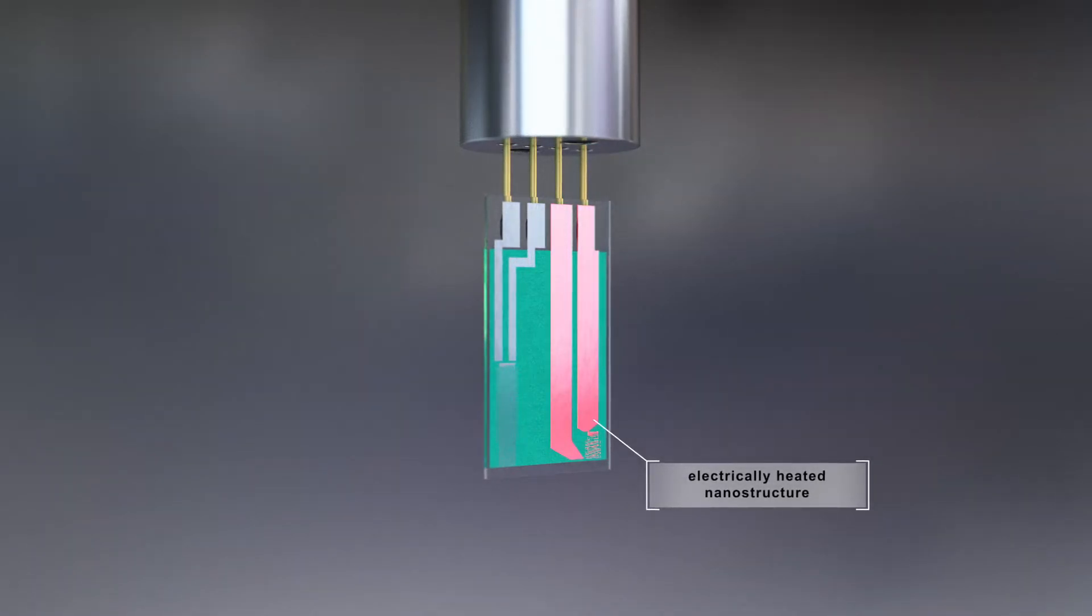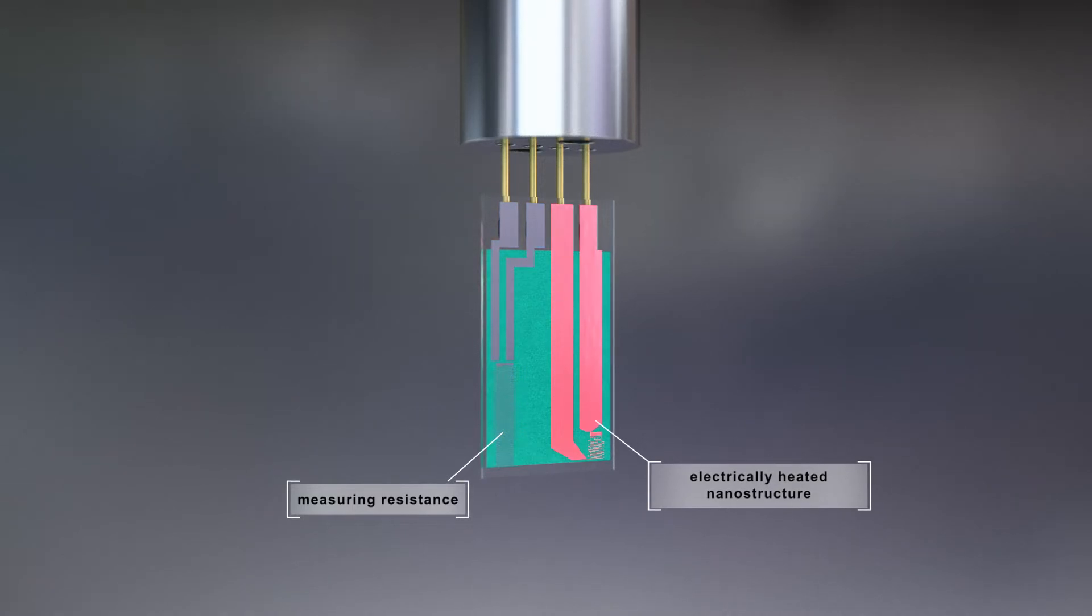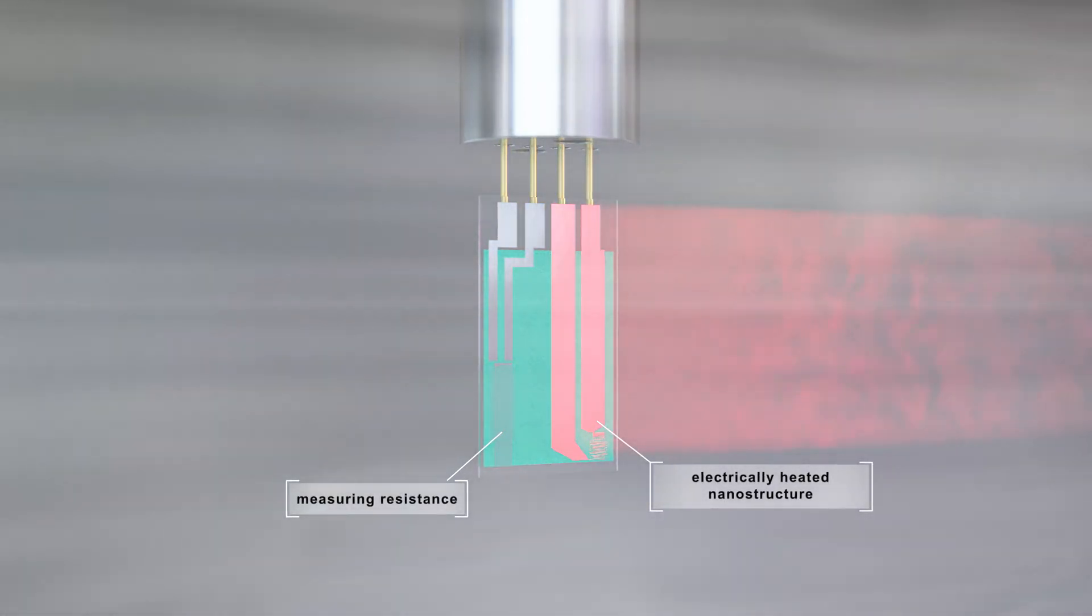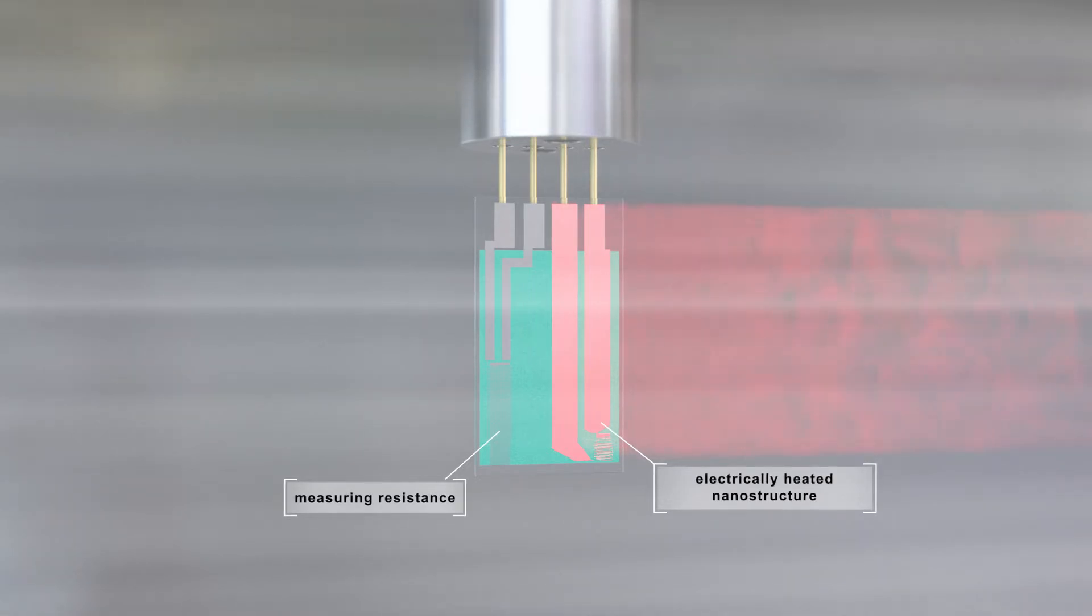Additionally to the electrically heated nanostructure, there is a second resistor layer. The faster a medium flows over the heated sensor element, the more heat it conveys. The change in resistance caused by the cooling is proportional to the mass flow of the medium.